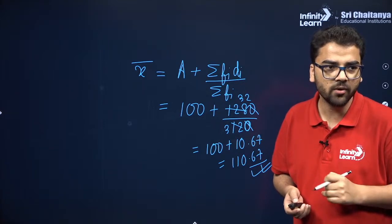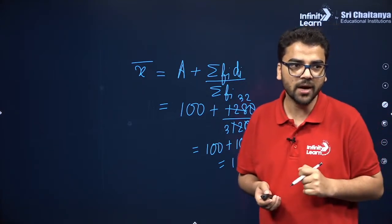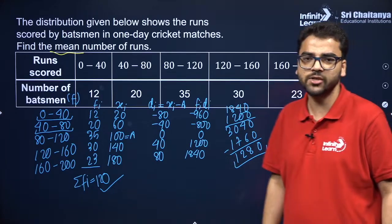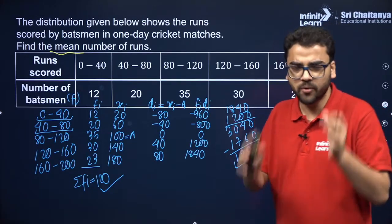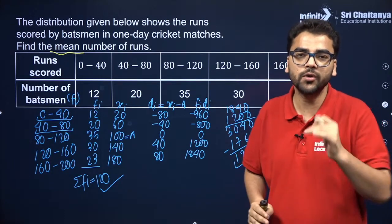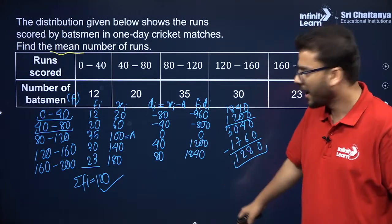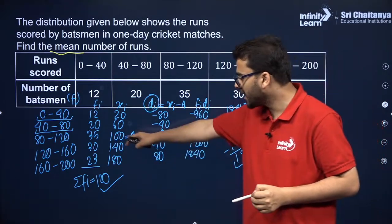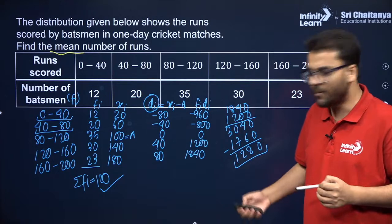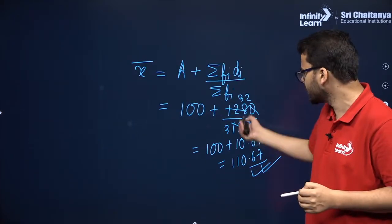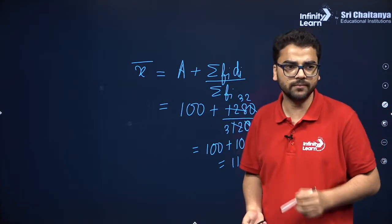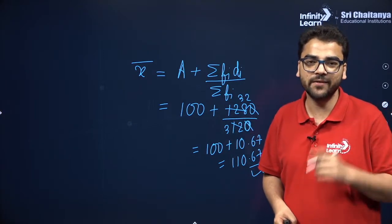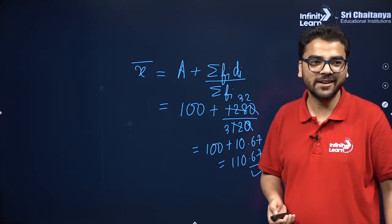The answer is 110.67, not 1.67 — if you are getting something different, you have a calculation mistake. The answer comes to 110.67 runs. This is a direct formula-based question; you just have to follow the process.